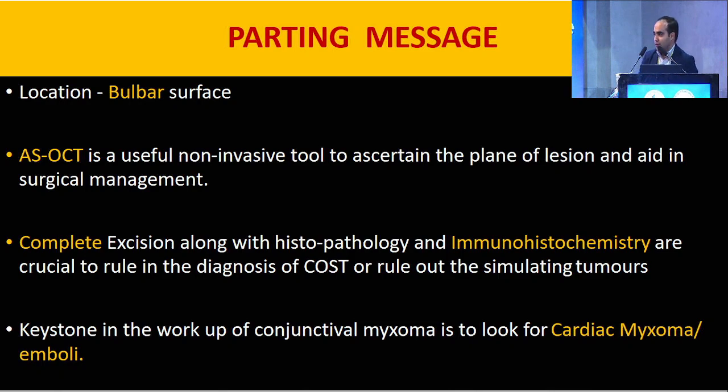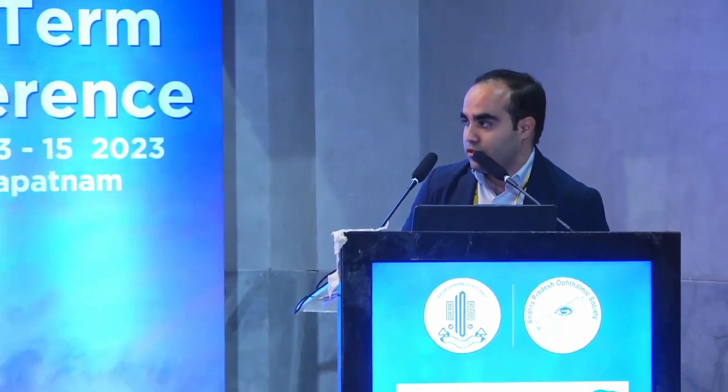Excellent case! Conjunctival stromal tumor is a very rare tumor. How many cases have been reported so far? In literature, around 13 — recently described in 2013 and 2011 — and in our hospital we have come across three such cases.